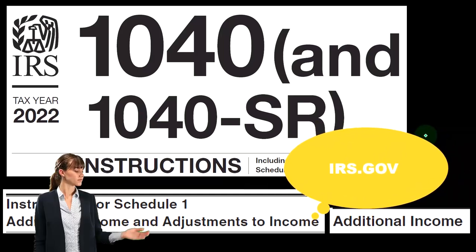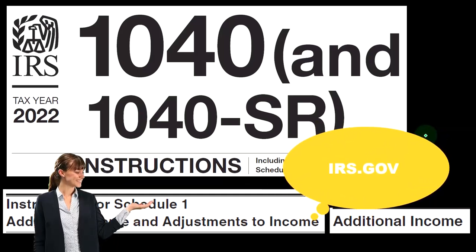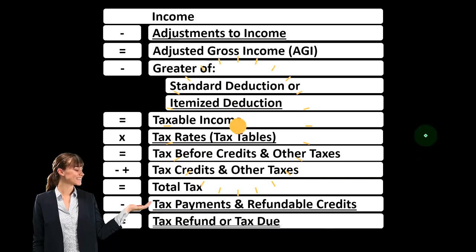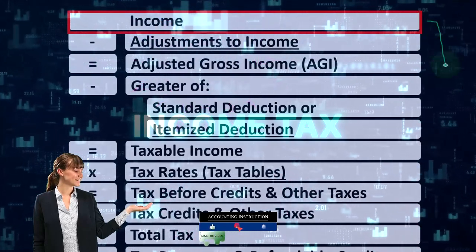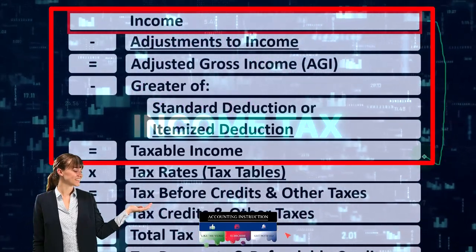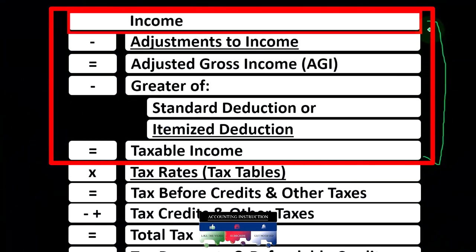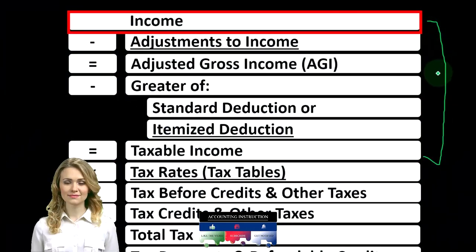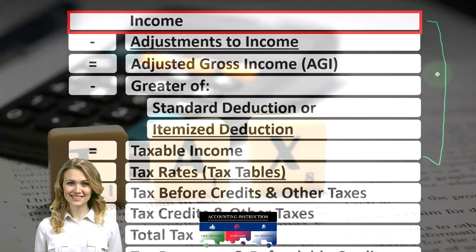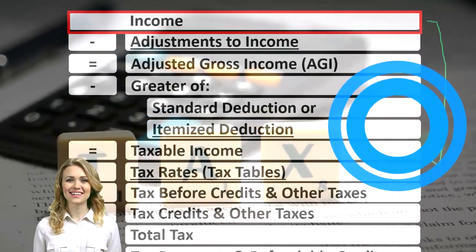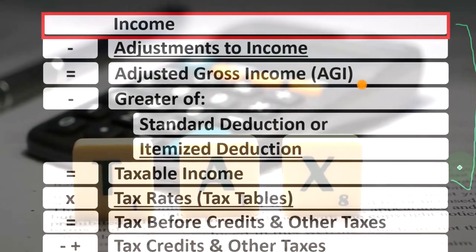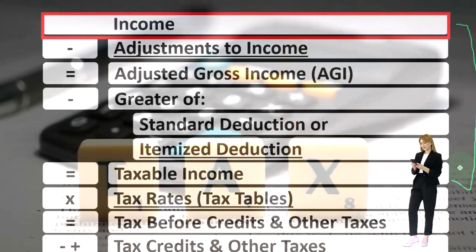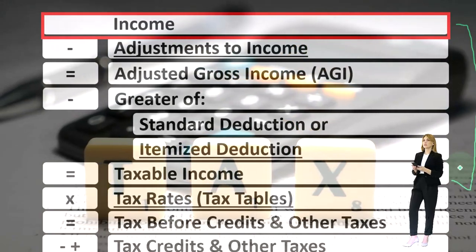You can find this at the IRS website, irs.gov. When looking at the income tax formula, we are looking at line one, that being income. The first half of the income tax formula is essentially an income statement — income minus deductions gives us taxable income. The goal is the opposite of a normal income statement: we want taxable income to be as low as possible.